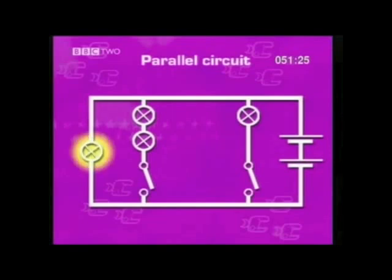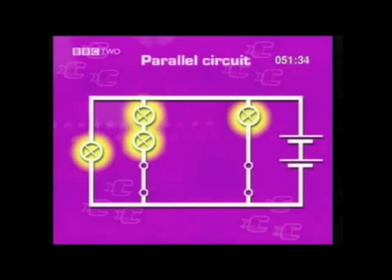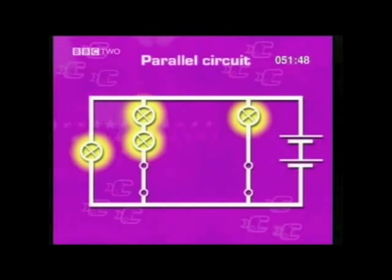In parallel circuits, there is more than one path the current can take between the terminals of the power supply. A switch in a parallel circuit will only affect those components in the same current path. The current splits and rejoins at the circuit junctions, and the current will not be the same in all parts of the circuit. But the total of the currents in the branches is the same as the current leaving and returning to the power supply.